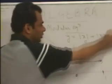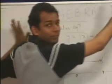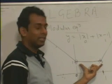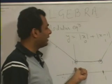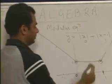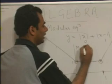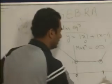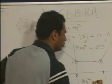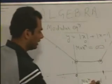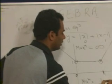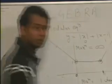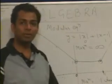Looking at this graph, the maximum can be infinity, but the minimum is this straight line segment. At this straight line, the value of y = 1. So the maximum value of y is infinity, and the minimum value of this function is +1, which occurs when x is lying between 0 and 1. Minimum value is equal to 1 when x lies between 0 and 1.